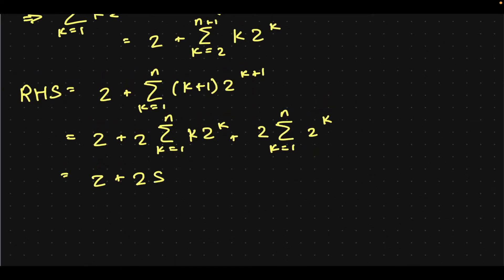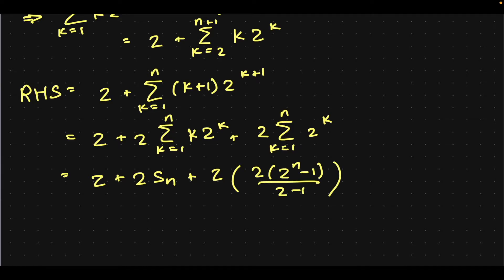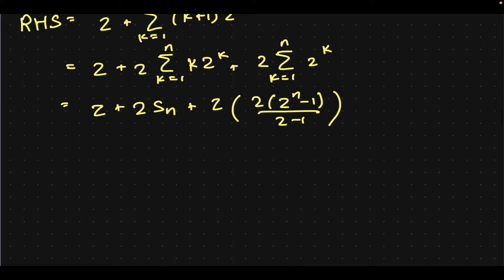So it's 2 times Sn, plus we have 2 times a geometric series from 1 to n, so that's the first term, which will be 1 — 2 to the n minus 1 over 2 minus 1. That's just a finite geometric series formula. So 2 plus 2 times Sn plus, I believe this will be 2 to the n plus 2 minus 4. So there we go.